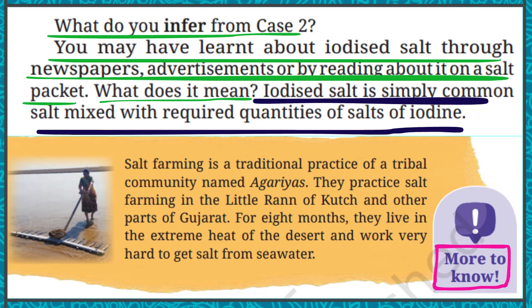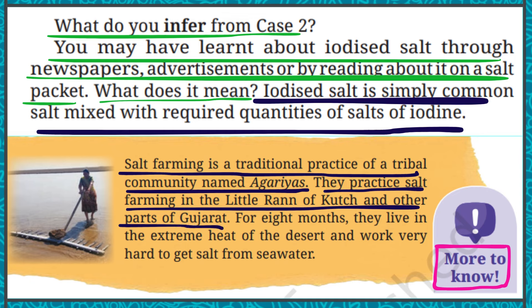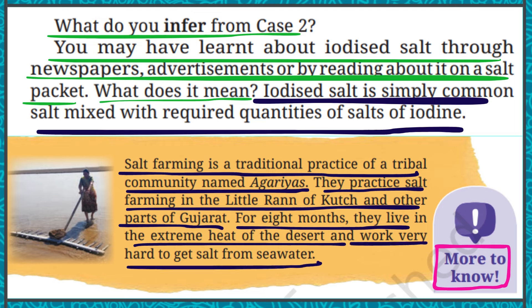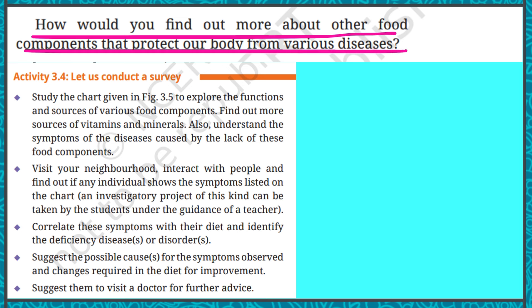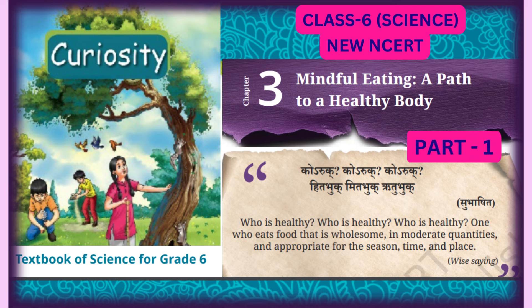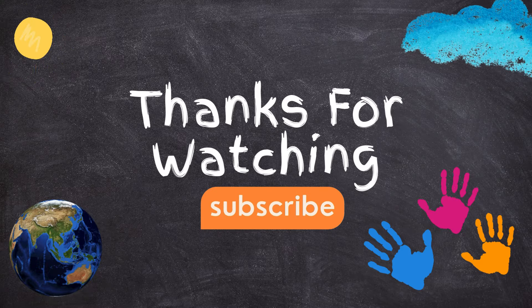Salt farming is a traditional practice of a tribal community named Agharia. They practice salt farming in the Rann of Kutch and other parts of Gujarat, living in extreme desert heat for eight months and working very hard to get salt from seawater. In the next part, we will cover the survey activity and the rest of the chapter. I hope you are enjoying these videos — please like, share, and subscribe to Kalyan TV channel. Thank you so much.